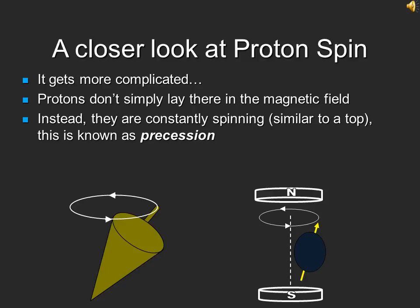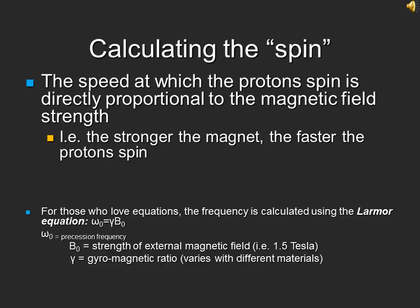Unfortunately, it gets a little more complicated. The protons don't simply sit in the magnetic field, but are constantly spinning like a top. This spinning of the proton is known as precession. We can actually calculate this precession frequency using the Larmor equation. This states that the precession frequency is equal to the magnetic field strength times a constant known as the gyromagnetic ratio. The gyromagnetic ratio is dependent on the material in the magnetic field. It is important to note that the precession speed changes directly with different external magnetic fields — the stronger the magnetic field, the greater the precession speed, and the faster the protons will spin.